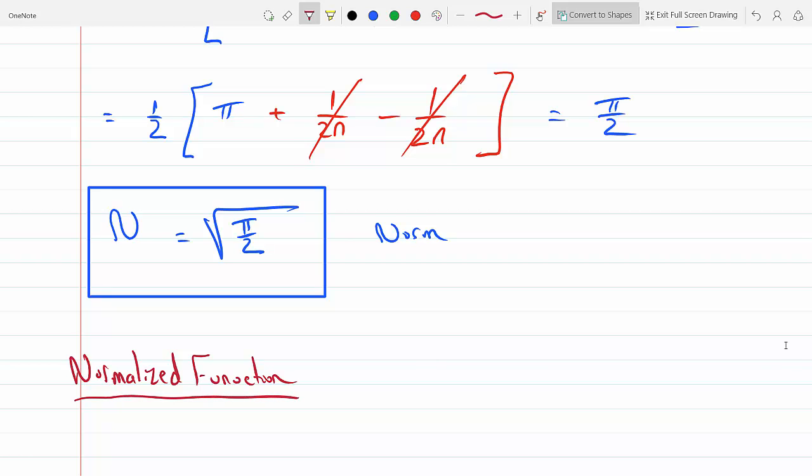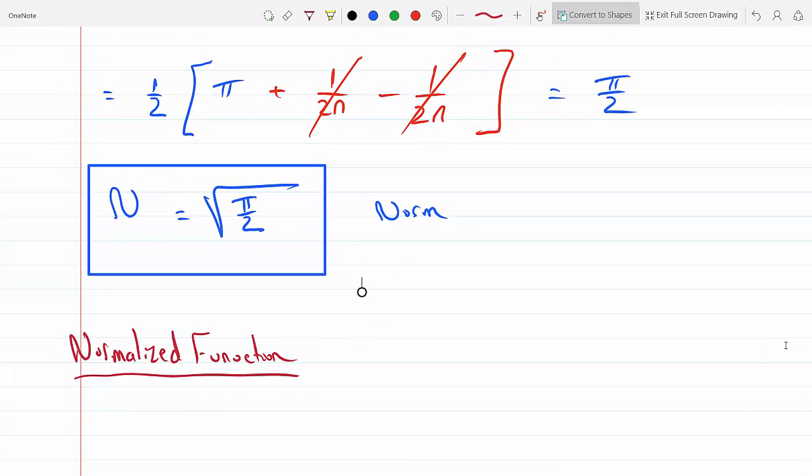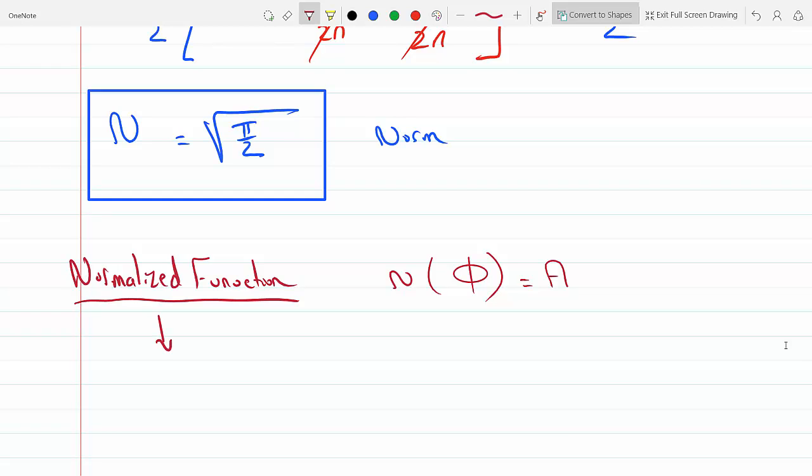So the normalized function—this is just flipping the answer around. We know that N normalizes the function, so N times the normalized function, let's say phi, has to equal A. So if the normalized function is phi, then phi will equal N inverse times A.